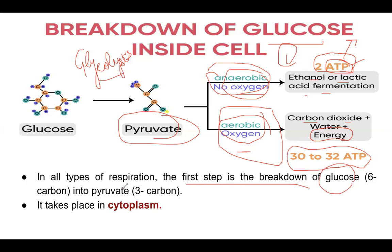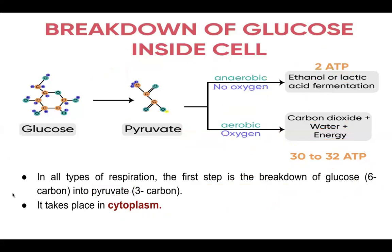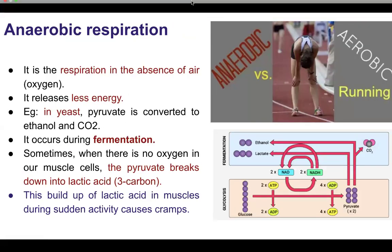The first step — glucose to pyruvate conversion — is common to both pathways. Glucose is a 6-carbon molecule, and pyruvate is a 3-carbon molecule. This glycolysis step occurs in the cytoplasm of the cell. After glycolysis, pyruvate moves from the cytoplasm into the mitochondria for further processing.